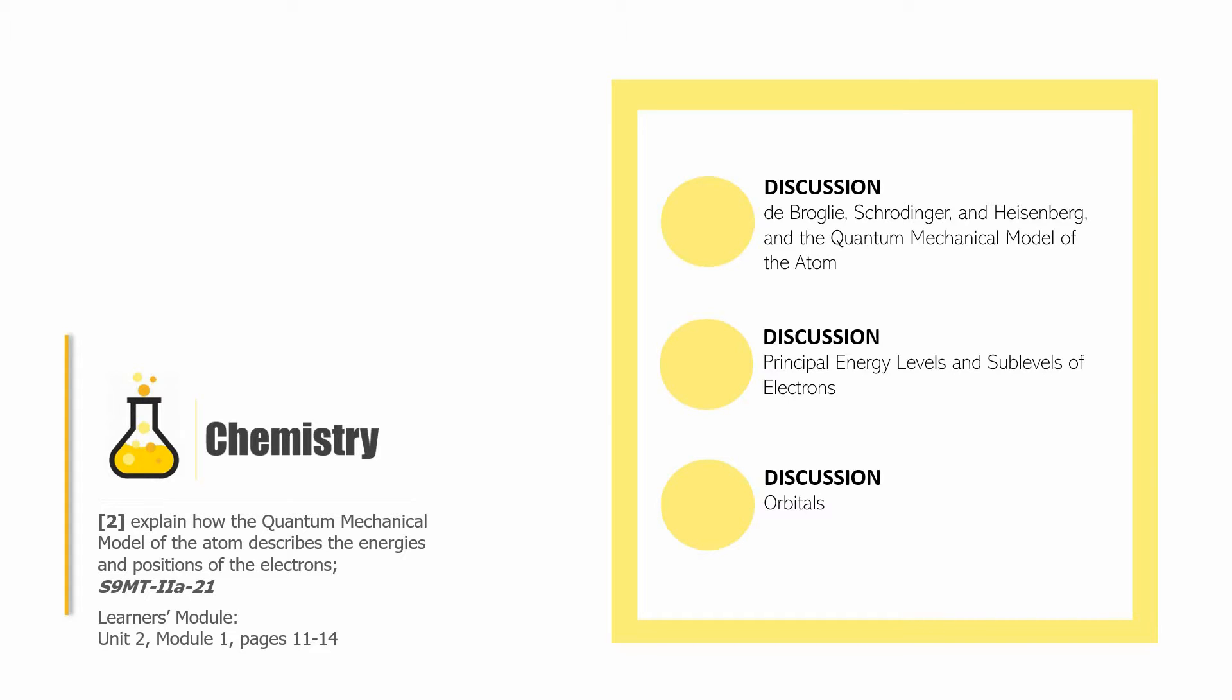As usual, this video is divided into the following parts. The first part is a discussion about de Broglie, Schrodinger, and Heisenberg and the quantum mechanical model of the atom. The second part is a discussion about the principal energy levels and sublevels of electrons. The last part is a discussion about orbitals.